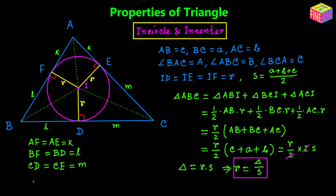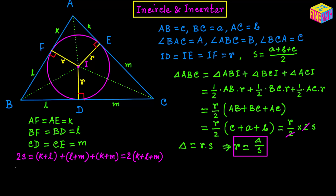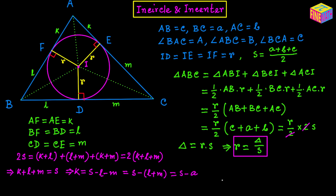Now thinking about the perimeter: 2S equals AB + BC + AC, which is (k + l) + (l + m) + (k + m) = 2(k + l + m). So k + l + m equals S, the semi-perimeter. From here, k equals S − l − m = S − (l + m). Since l + m equals BC which is lowercase a, we get k = S − a. Similarly, l = S − b and m = S − c.